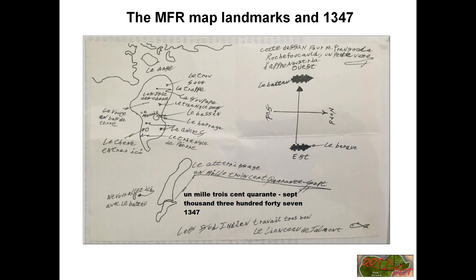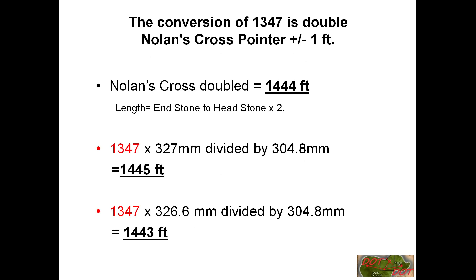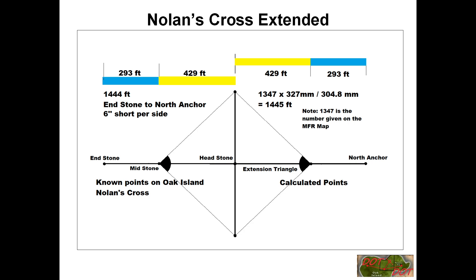Here we go. This is the Rochefoucauld map, one of the central themes, central items to this theory. And of course, Nolan's Cross, discovered by Fred Nolan in 1980. And we have the 1445 distance and its relationship to Nolan's Cross.